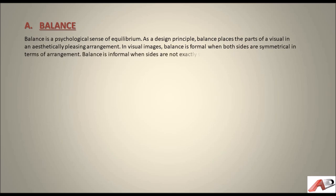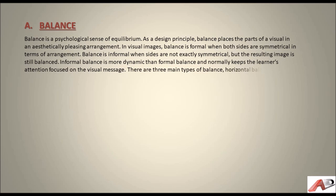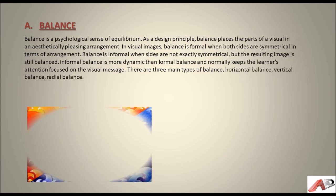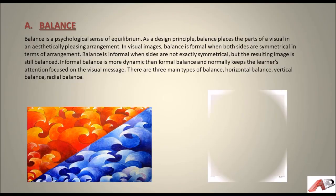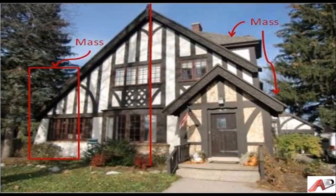Balance is informal when sides are not exactly symmetrical but the resulting image is still balanced. Informal balance is more dynamic than formal balance and normally keeps the learner's attention focused on the visual message. There are three main types of balance: horizontal balance, vertical balance, and radial balance.